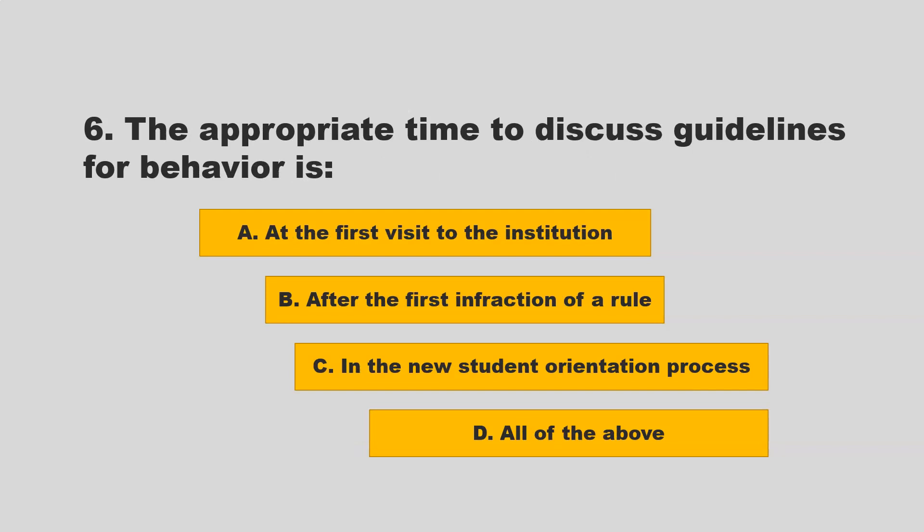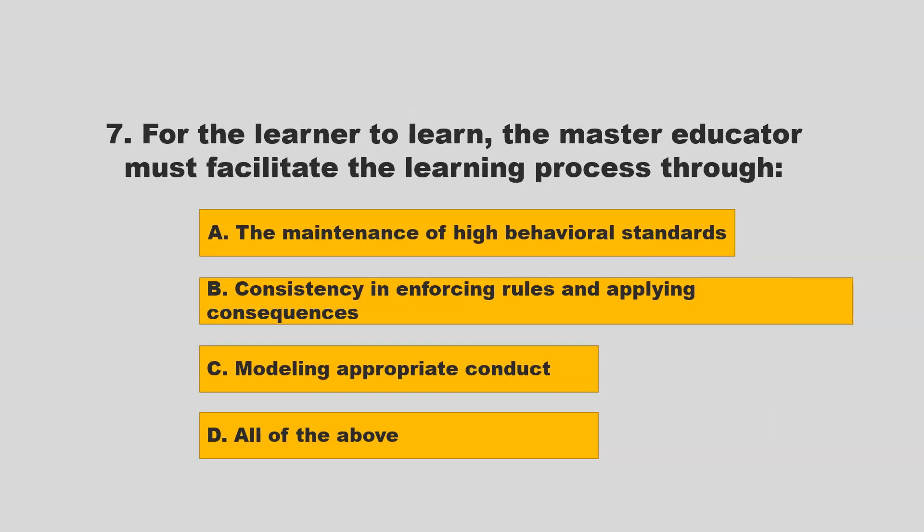The appropriate time to discuss guidelines for behavior is in the new student orientation process. Other options included at the first visit to the institution, after the first infraction of a rule, or all of the above. If you chose C, in the new student orientation process, you are correct.